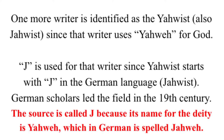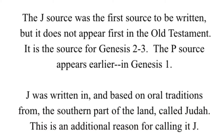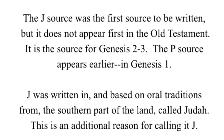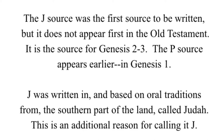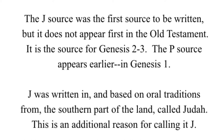German scholars led the field in the 19th century. The J source was the first source to be written, but it does not appear first in the Old Testament — it is the source for the 2nd and 3rd chapters of Genesis, while the P source appears earlier in the 1st chapter. J was written in, and based on oral traditions from, the southern part of the land called Judah, which is an additional reason for calling it J.